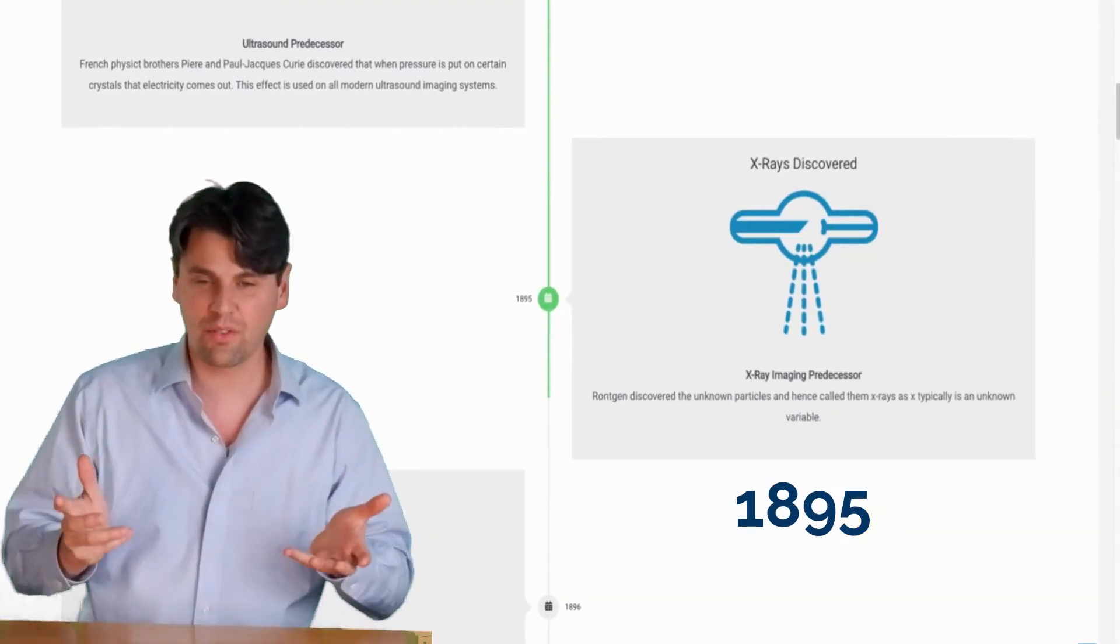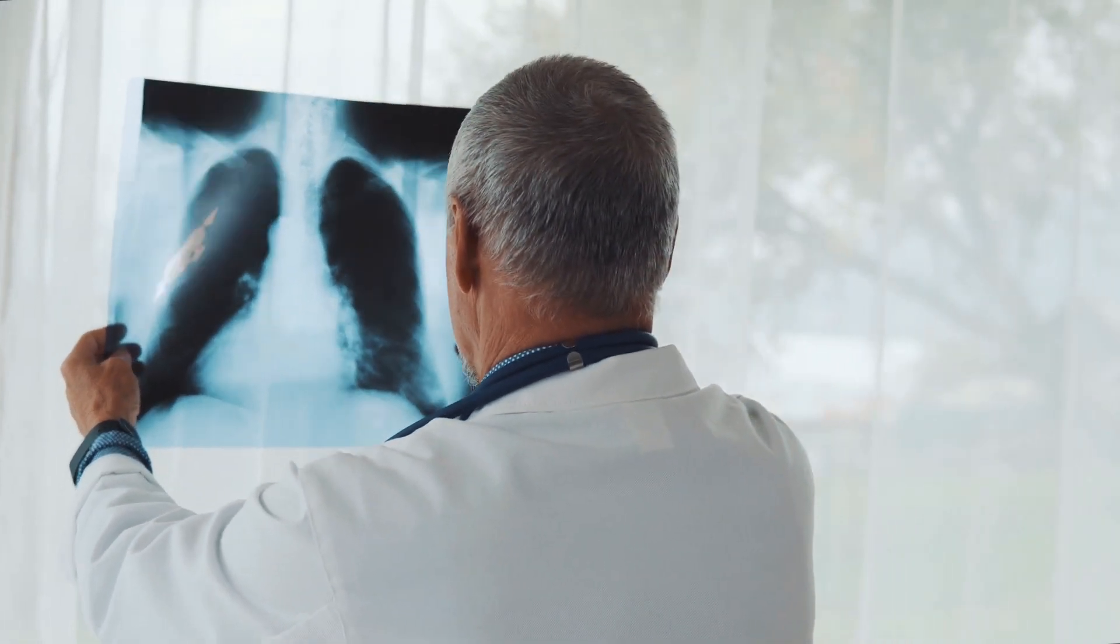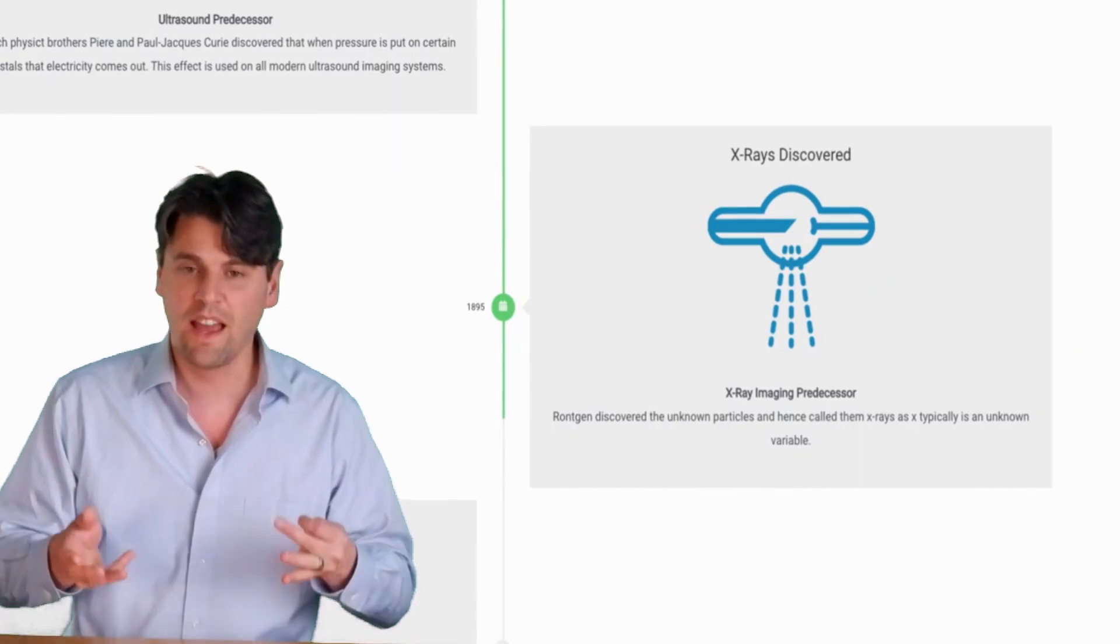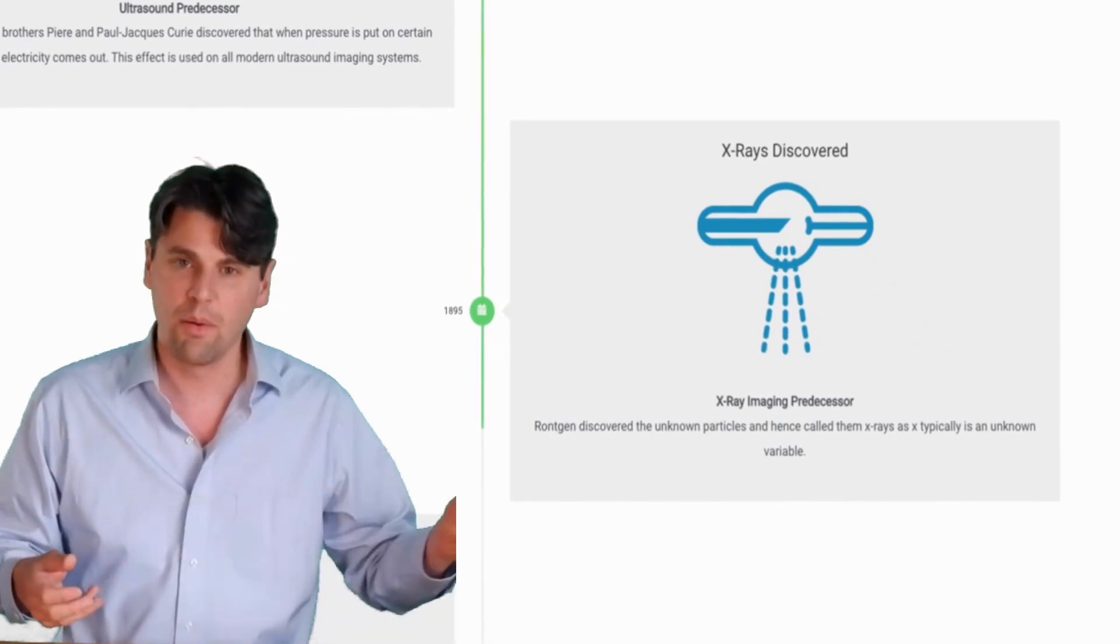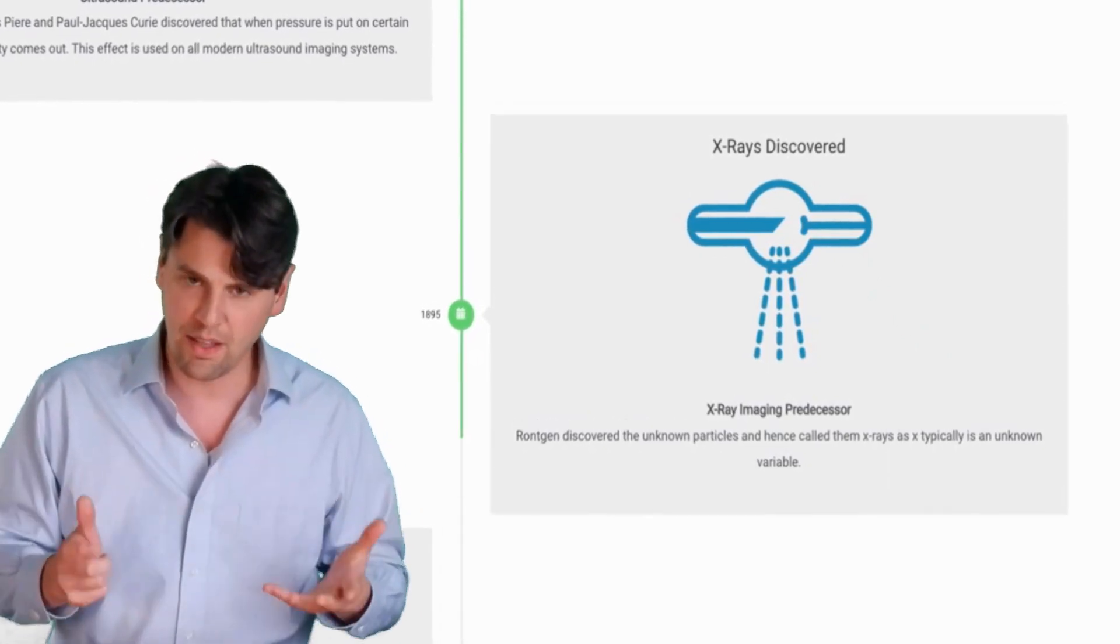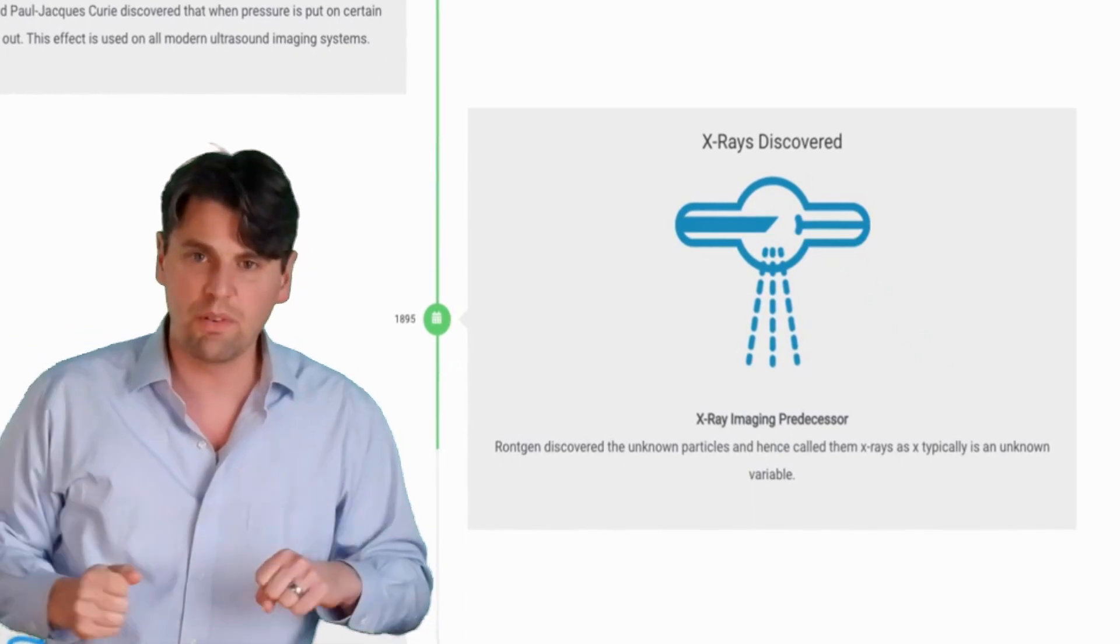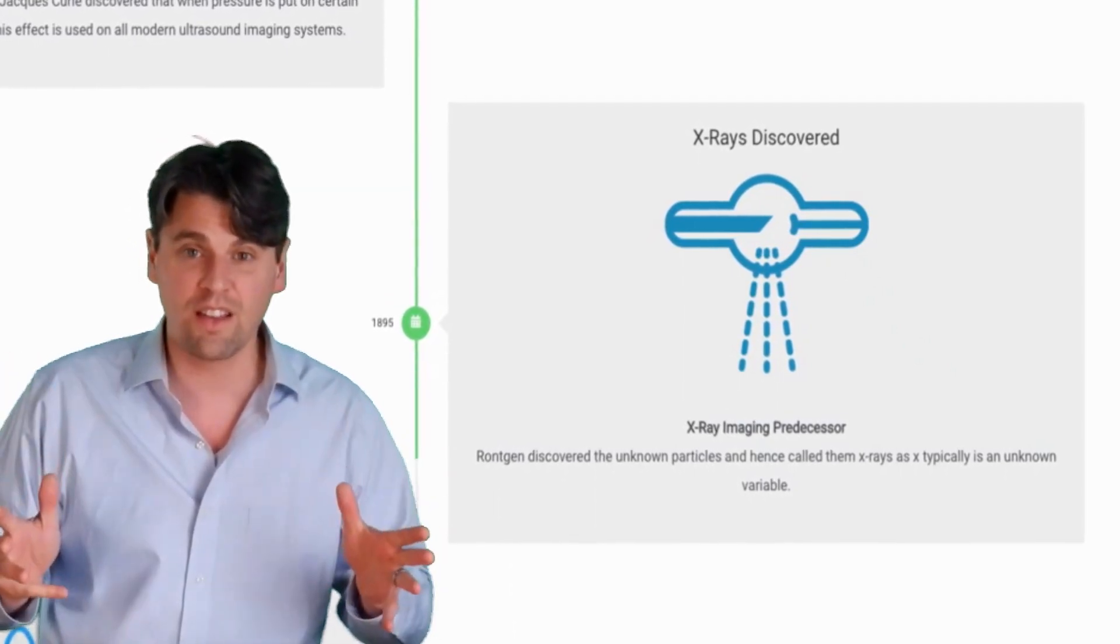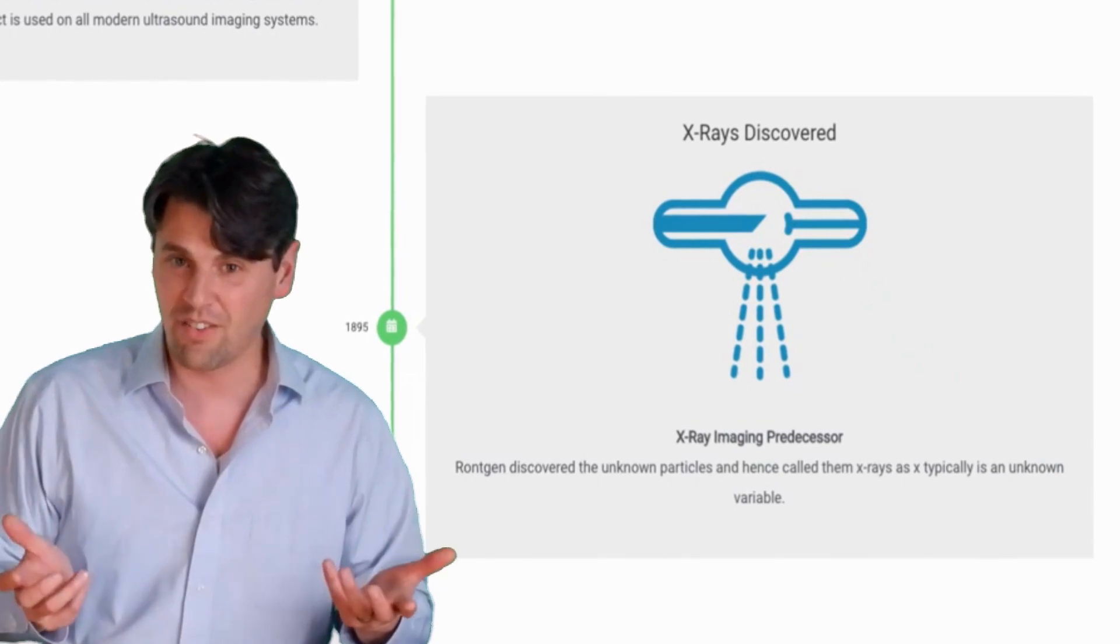Next up is x-rays. This was actually the first imaging that allowed doctors to be able to see through the human body, and x-rays were actually discovered by accident. Röntgen was playing around with a cathode ray tube—cathode rays are actually electrons. He knew the electrons had been stopped in his experiment, but he had a screen behind him and was seeing differences on this screen due to the cathode ray tube. He didn't know what it was—it was actually x-rays. So he called them x-rays because x is the unknown when we are typically writing down a math equation.